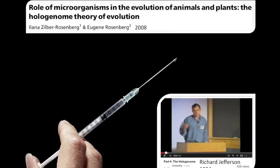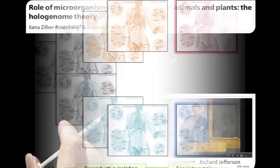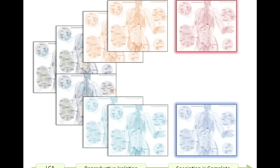The history of the hologenome is mixed up in many different people thinking about this. There are two independent origins of the term. In 1994, Richard Jefferson, who worked on plants and endophytes, proposed the hologenome idea — you can find a talk on YouTube. Then independently, the Rosenbergs published this theory in 2008 and have done some nice work in Drosophila on it as well.